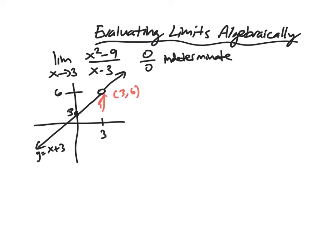And you may wonder, okay, well, so here I can see that it's going to be 6 because I'm coming in and approaching this point, and I don't care that it doesn't exist at that point because I care about the behavior around it. But how am I going to find this algebraically?